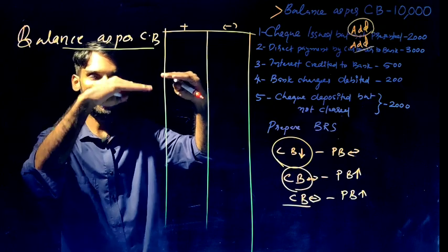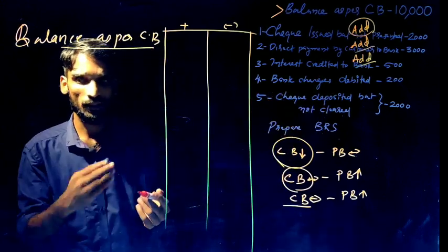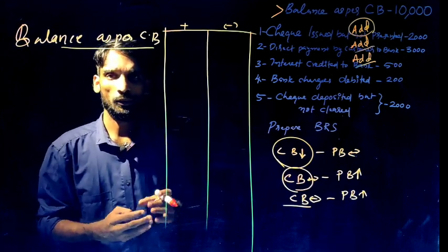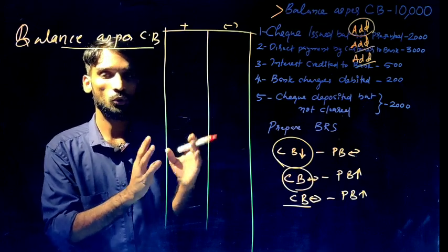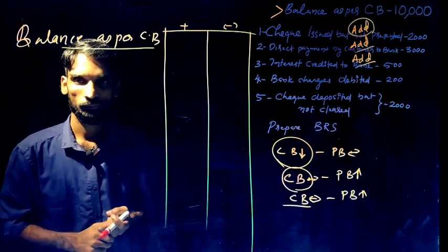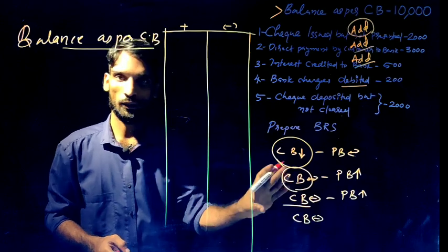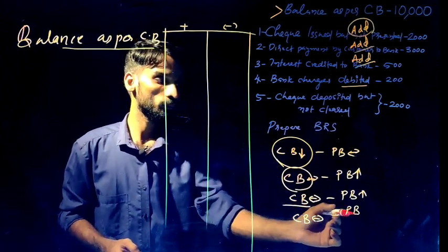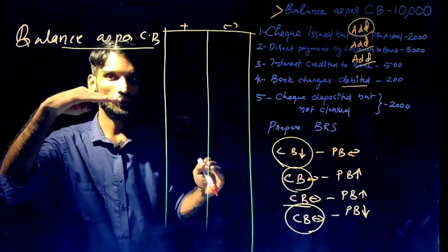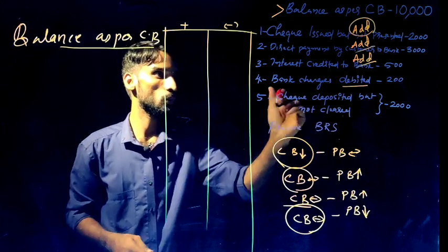Transaction four: bank charges debited. Bank charges include ATM, message, and service fees we pay to the bank. When these charges are debited by the bank in the Pass Book, but not yet recorded in the Cash Book, we need to account for them. This is a minus item — we deduct bank charges from the balance.